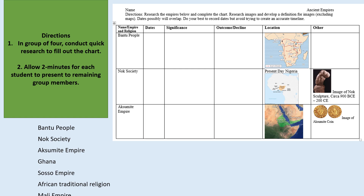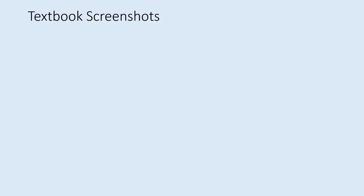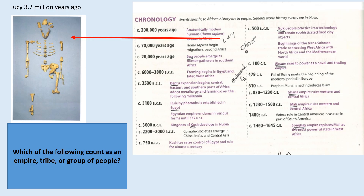As we go through these slides, if you are using the grid sheet, some of these images are required whereas some are not. This one is not an AP required source, neither is this one. We are going to begin with textbook screenshots. The first image is the image of Lucy. Lucy is crucial because this potentially places the birthplace of humanity in Africa. European standards through the Hamitic thesis, as well as the Dark Continent, are going to argue that Africa has nothing to contribute to humanity, hence the need to try to place the birthplace of humanity in Africa.